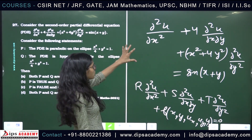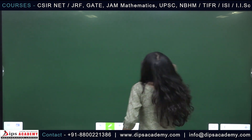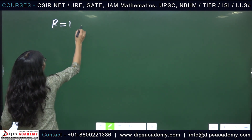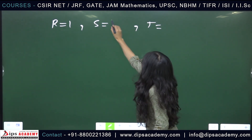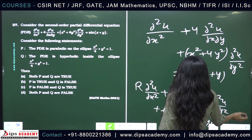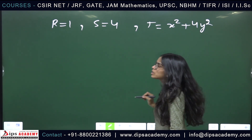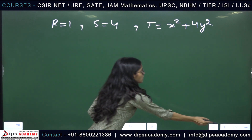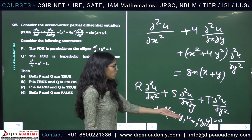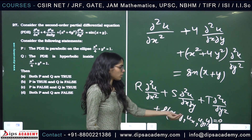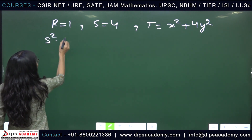Comparing the given equation with the general form, we identify R = 1, S = 4, and T = x² + 4y². The discriminant is given by S² − 4RT, treating the equation as a quadratic in the derivative terms.